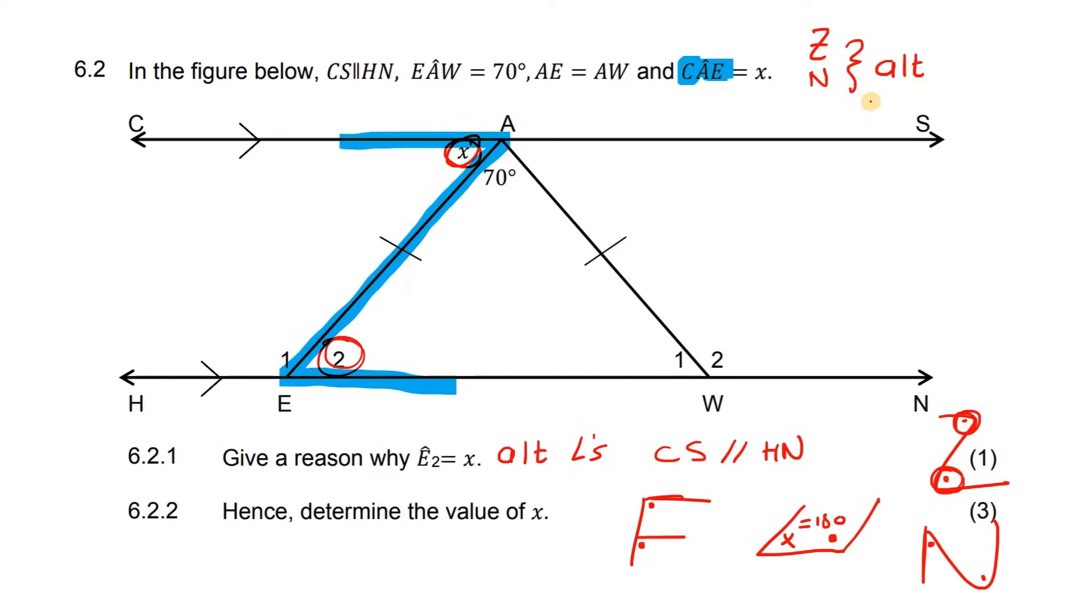Let's recap: alt for alternating angles, F is corresponding, and U is co-interior.